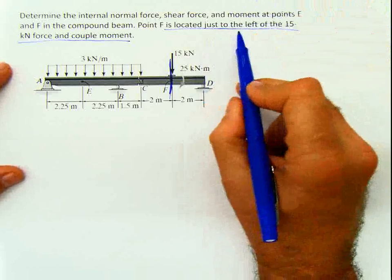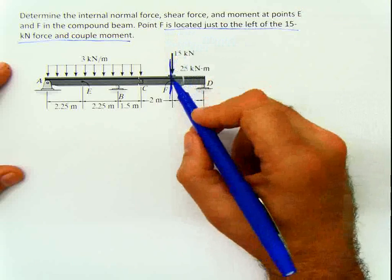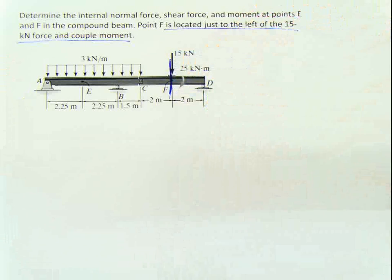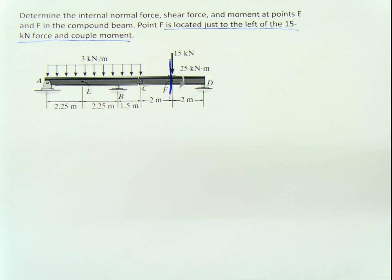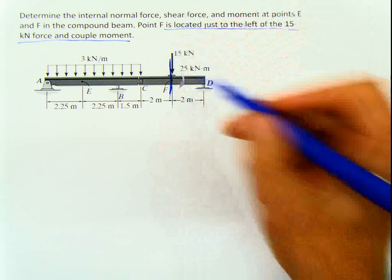If the problem doesn't say 'located just to the left' but just says 'point F,' then we have to make a cut at point F. In that case, you do it one side including it once, and then again not including it, or vice versa — you can see it included and not included. But in this problem it's easy; we just have to do one section.